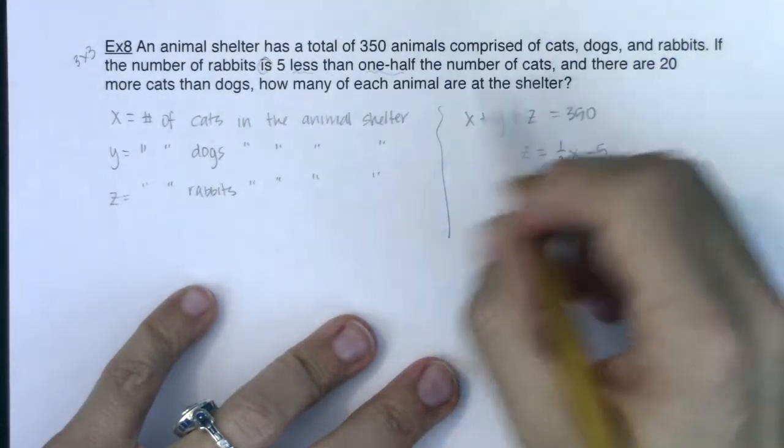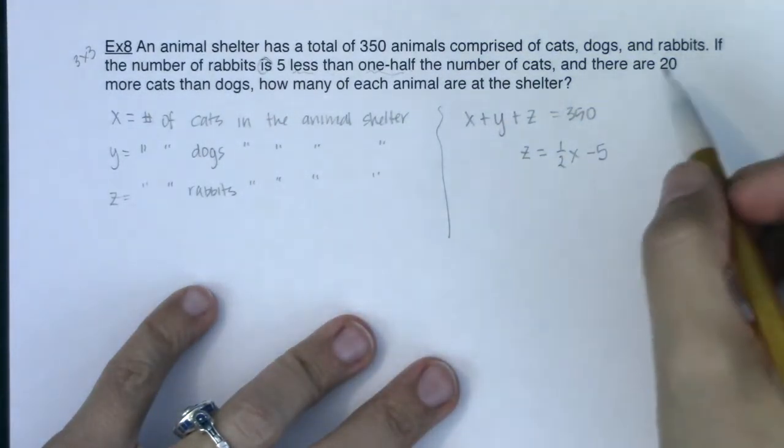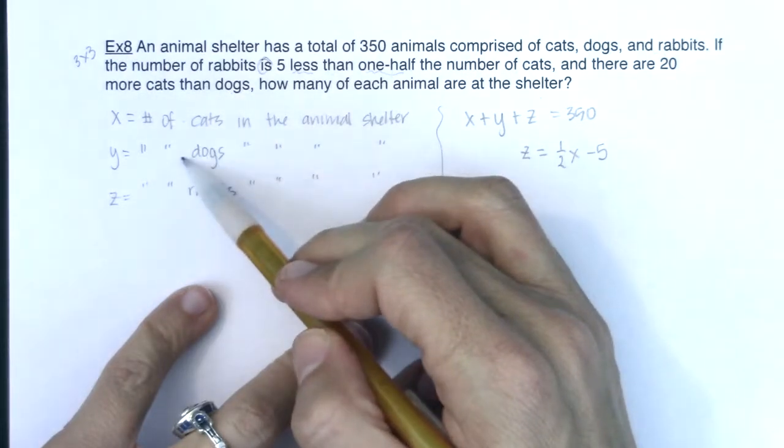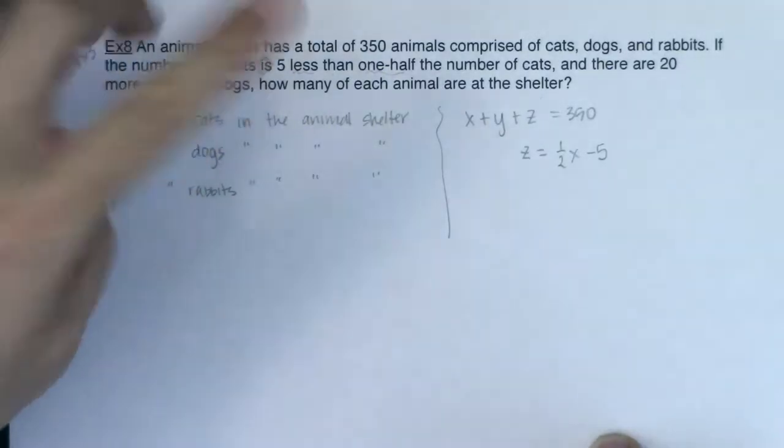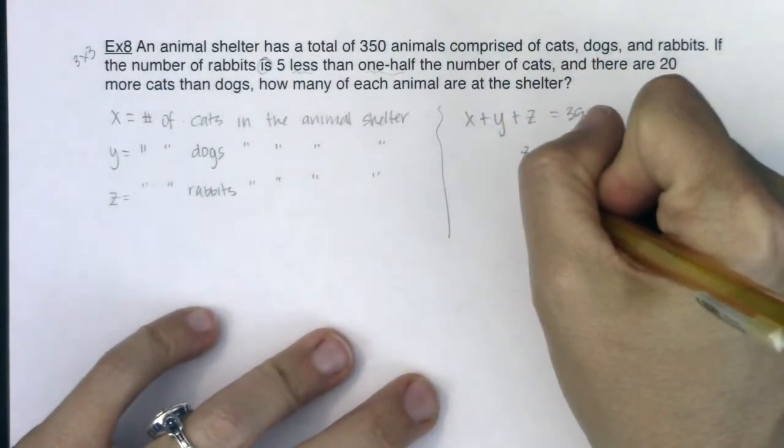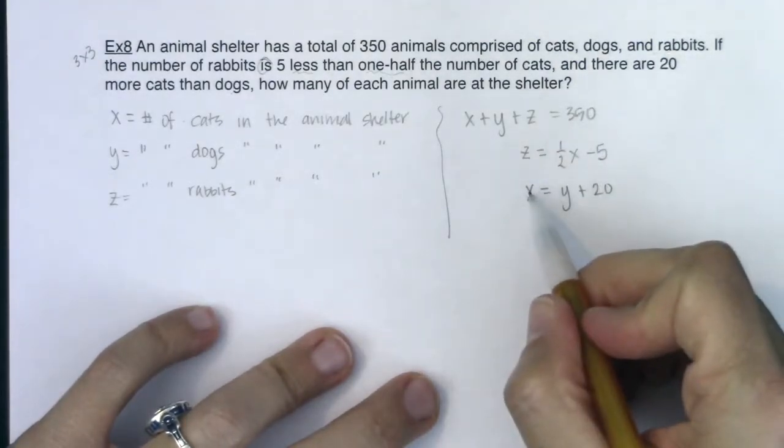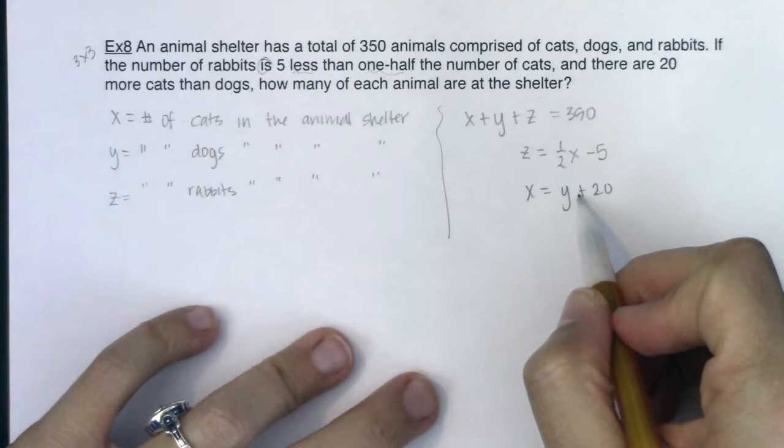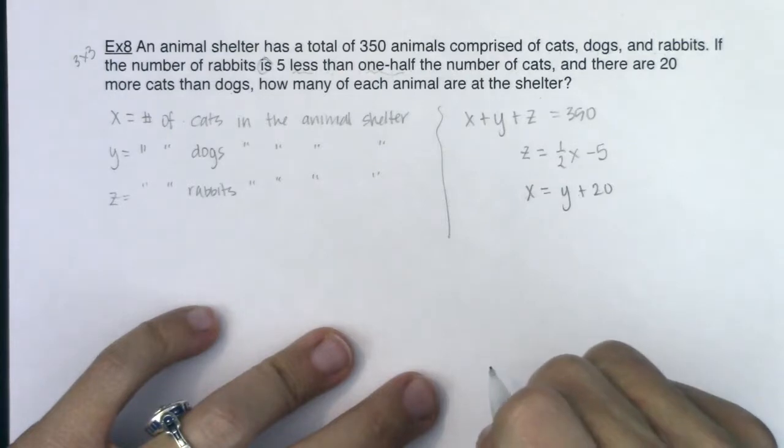Then we have there are 20 more cats than dogs. So 20 more cats than dogs. I like to take a step back and forget about the number—there are more cats than dogs. So x is a larger number than y. If there are 20 more cats than dogs, then I need to take the number of dogs and add 20 to it. So cats are dogs plus 20, which gives us x equals y plus 20.